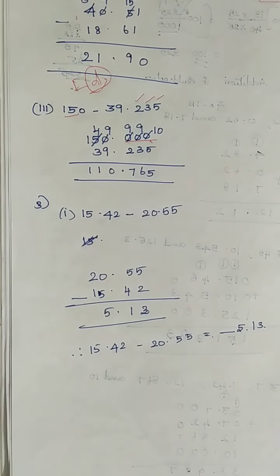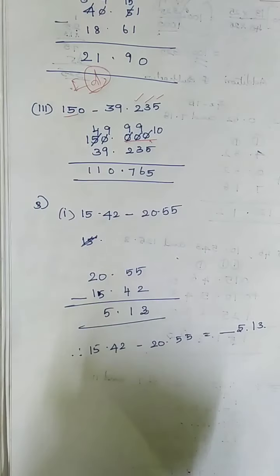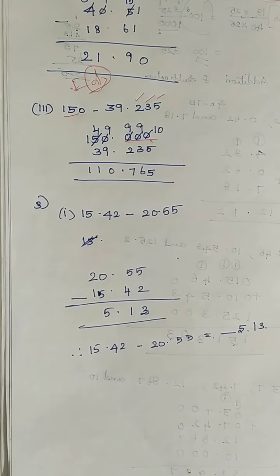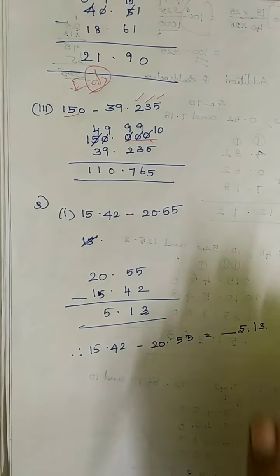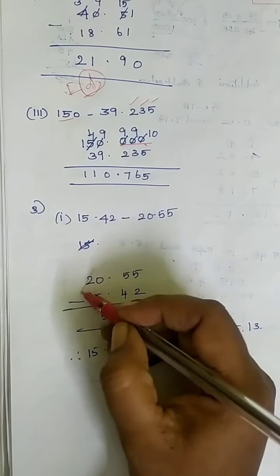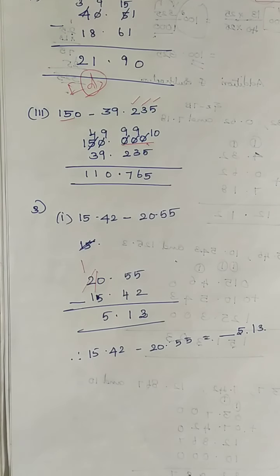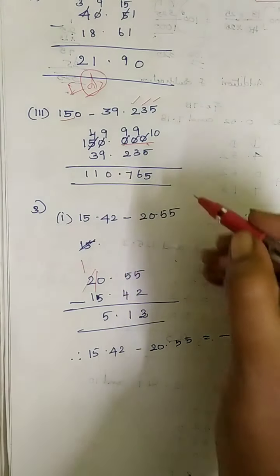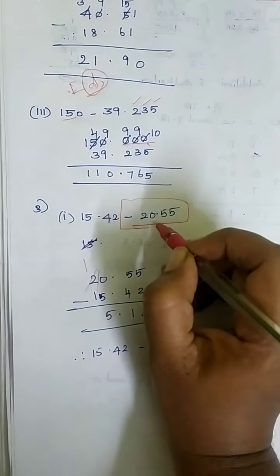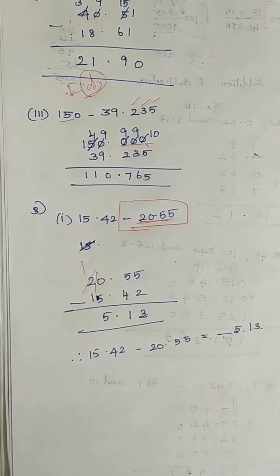Third problem: 15.42 minus 20.5. Looking at the question, the bigger number is in the second place. So we follow normal subtraction but write the bigger number first. We do 20.55 minus 15.42. 5 minus 2 is 3. 5 minus 4 is 1. 0 minus 5 is not possible, so we borrow from 2; 0 becomes 10. 10 minus 5 is 5. 1 minus 1 is 0. Normal subtraction gives 5.13. But since the question carries a negative symbol where the bigger number is, the answer is minus 5.13.